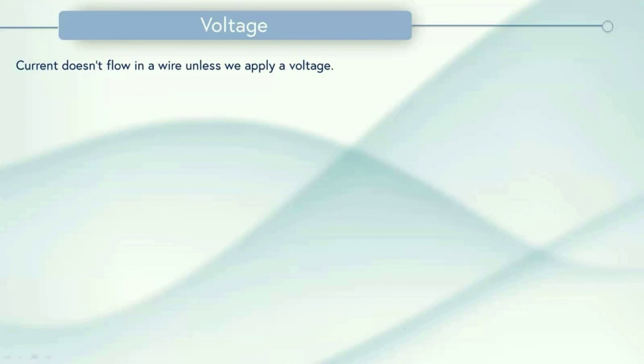So we looked at current in a wire before, and current doesn't flow in a wire unless we apply a voltage across it. We can imagine a voltage as pushing a current through a wire. So generally, if you have a larger voltage, you're going to have a larger current.